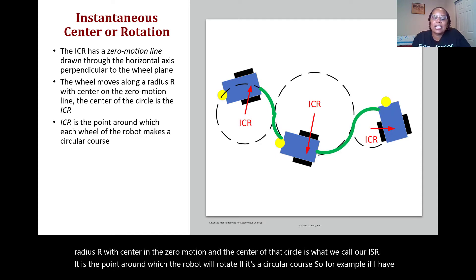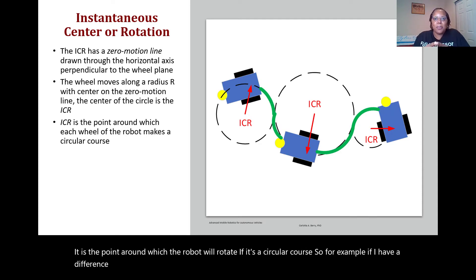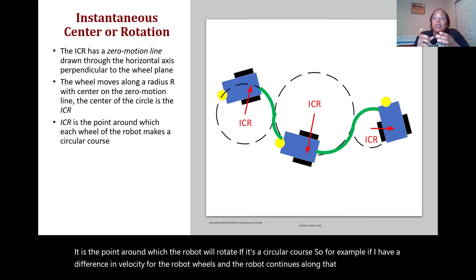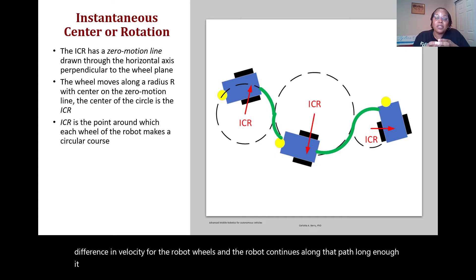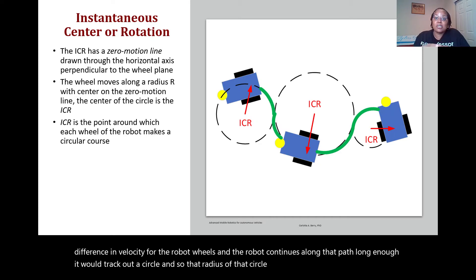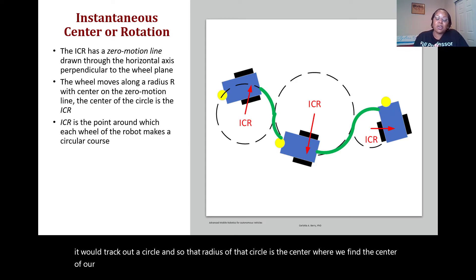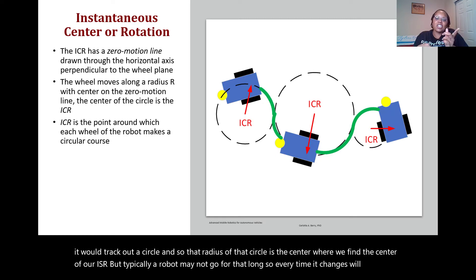The radius of that circle is where we find the center of our ICR. Typically a robot may not travel that long, so every time it changes wheel velocities the ICR changes — its trajectory will change accordingly.